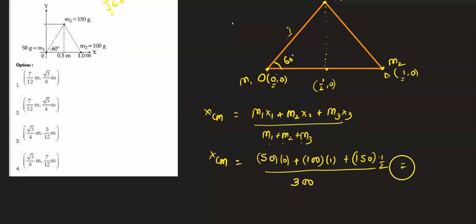If we look at this, we will get 100 plus 75, that is 175 upon 300. This will be the x coordinate. After simplifying, I will get xcm as 7/12 meter. So x coordinate will be 7/12.